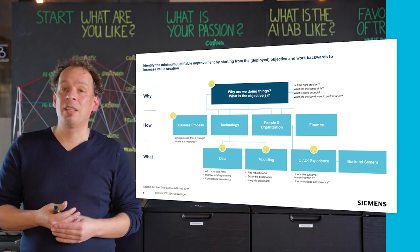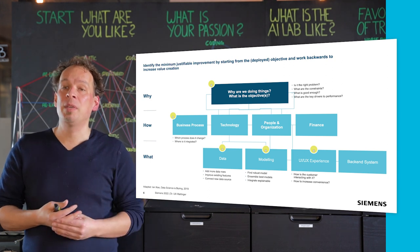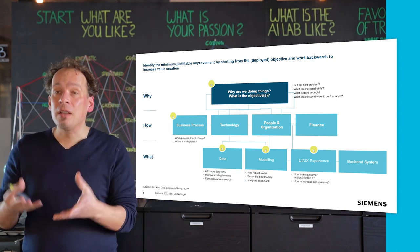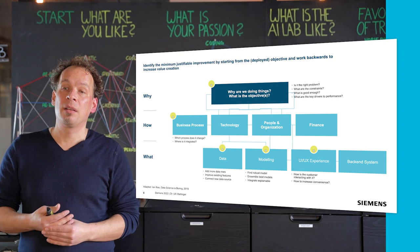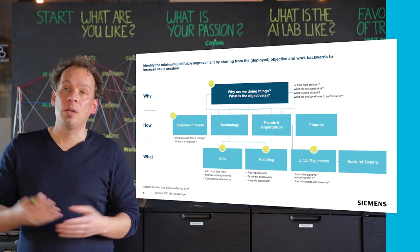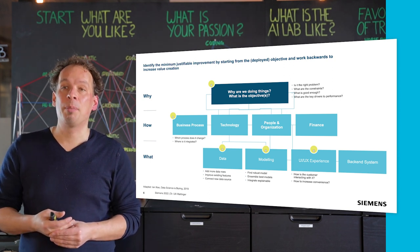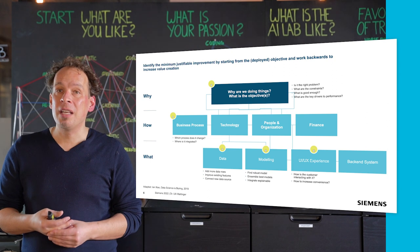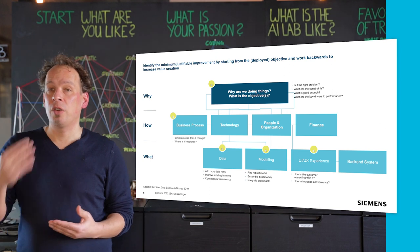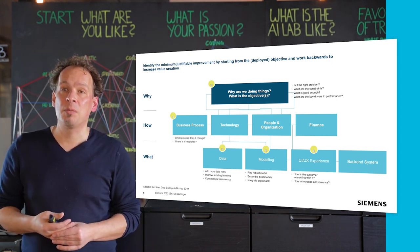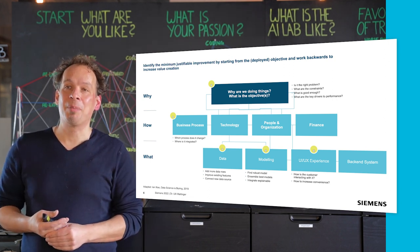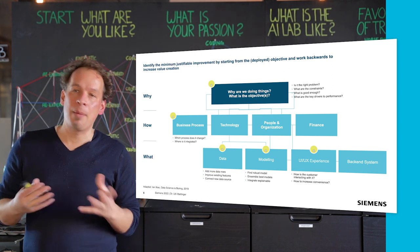Fourth is the data perspective: do we need the data, what kind of data do we need, do we need to improve on existing features, and do we need to connect new data sources? Last but not least is the modeling — finding the best model, the best solution architecture, and the best machine learning aspects to fuel your application as an engine. So you need to quantify the minimum justifiable improvement going from why to how to what, and don't forget user experience — your clients and users need to be able to access your applications. It's not only about the machine learning.